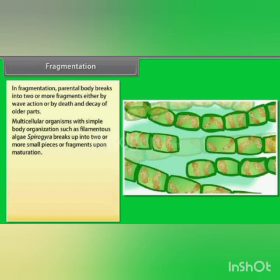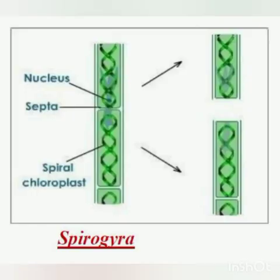The example of fragmentation is Spirogyra. Spirogyra is an alga. You can see in the picture rectangular cells, and in each cell there is a green spiral-arranged structure — this is the spiral chloroplast, which contains chlorophyll and performs photosynthesis. The nucleus is also present. You can see the Spirogyra is broken into fragments, and these fragments grow up into complete individual organisms.